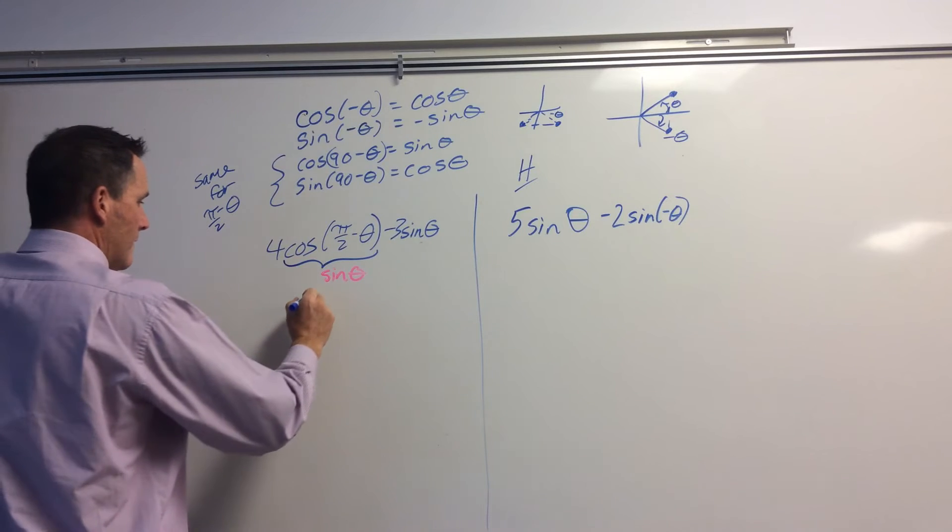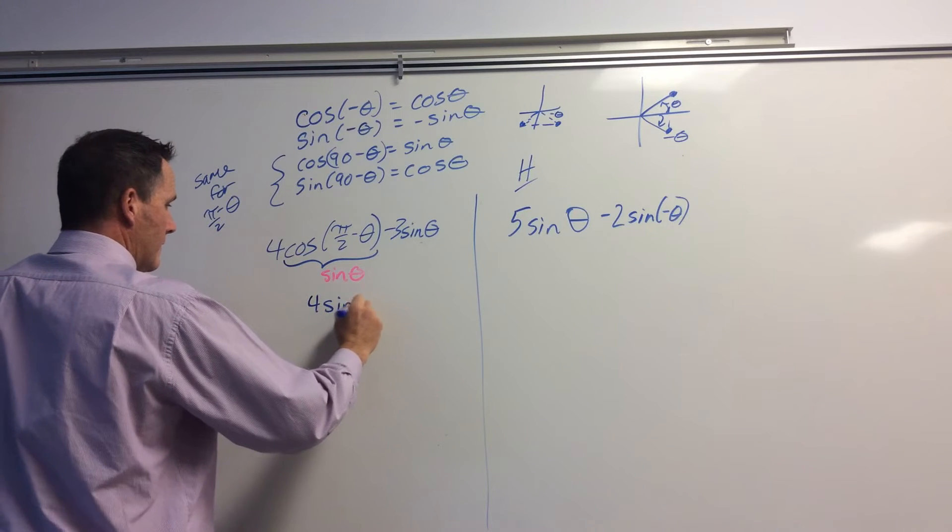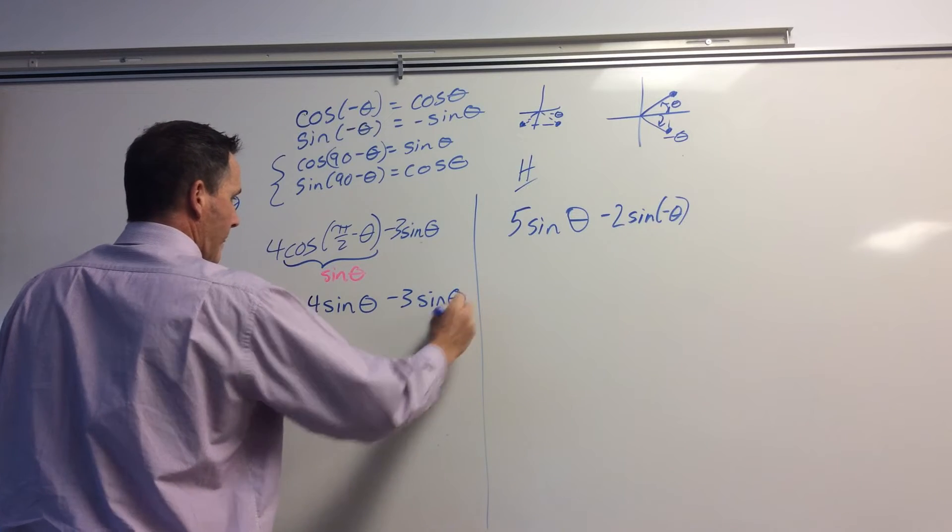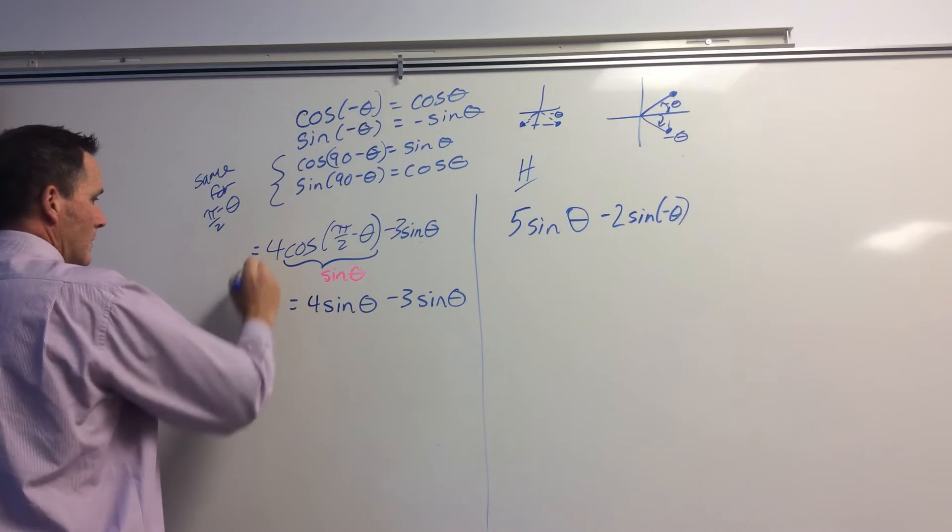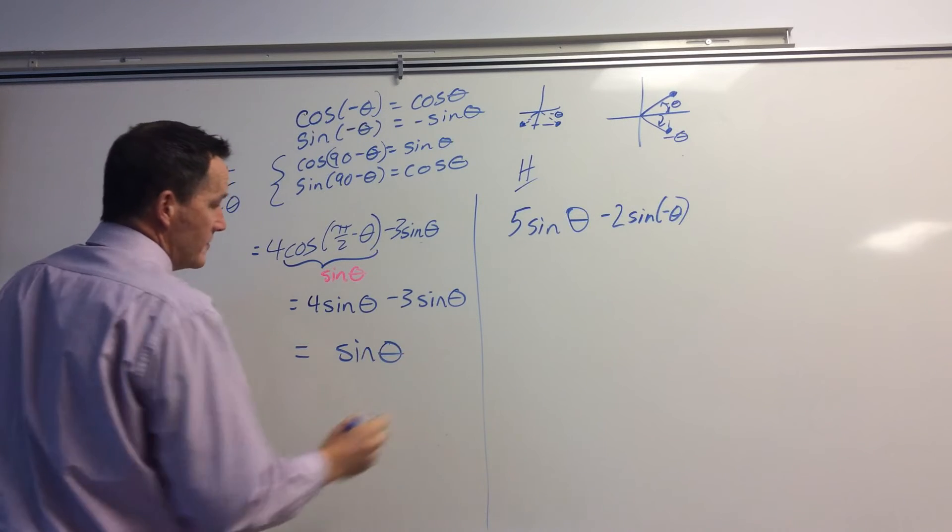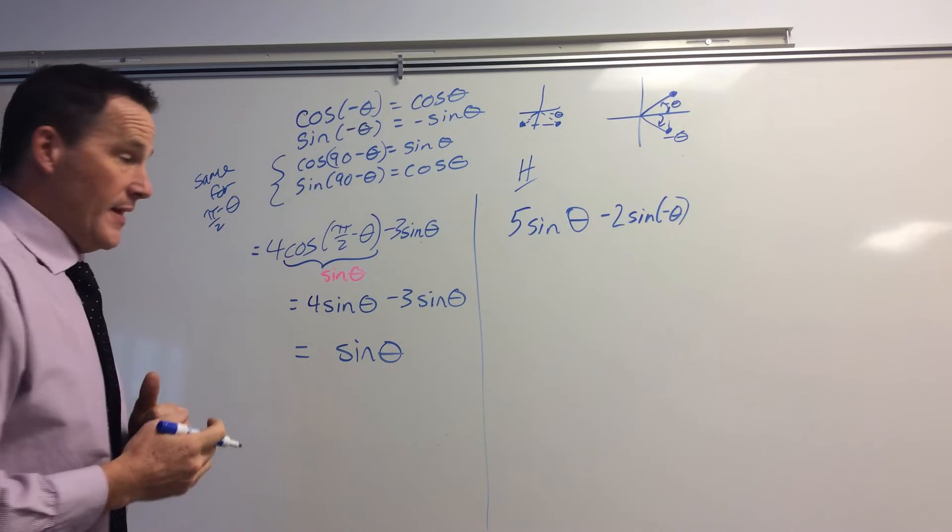So that gives me 4 sine theta minus 3 sine theta, which this expression then simplifies to just sine theta. Because 4 minus 3 is 1. And that's it for that.